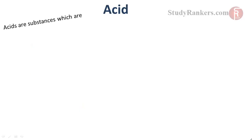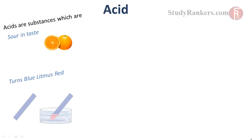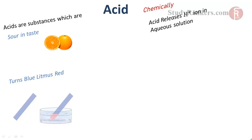Simply defining acids: acids are those substances which are sour in taste. Acids turn blue litmus paper into red when dropped on it. If we go into more details, acids are those substances which generate H⁺ ions when dissolved in water, or in aqueous solution. H⁺ combines with H₂O to give H₃O⁺ ions, also known as hydronium ions.